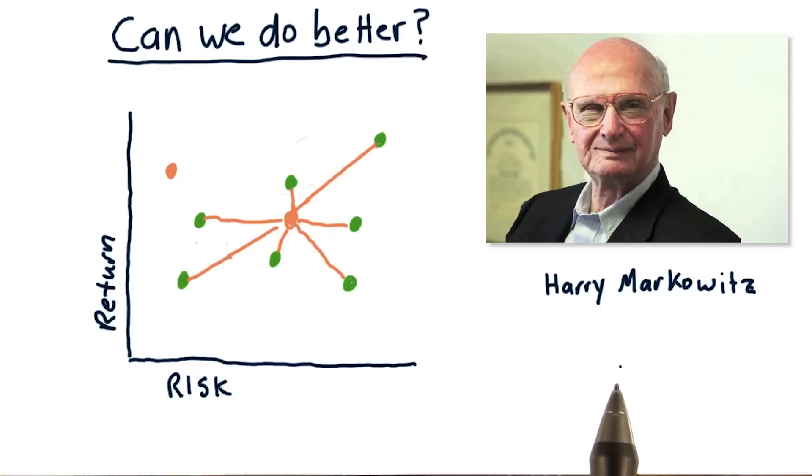Markowitz showed that a blend of stocks and bonds is actually lower risk than either one of those by themselves. And I'll show you how that makes sense in a moment.